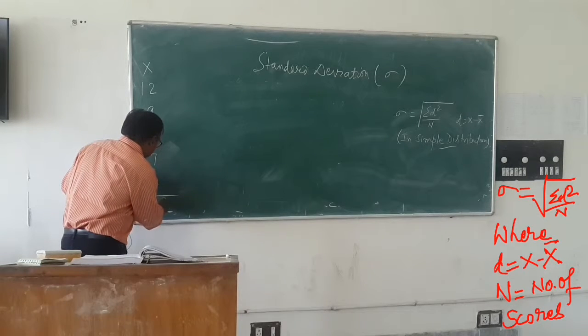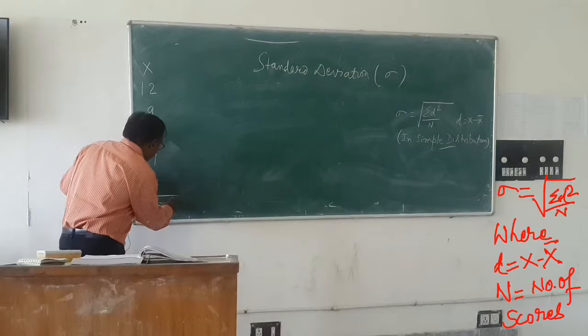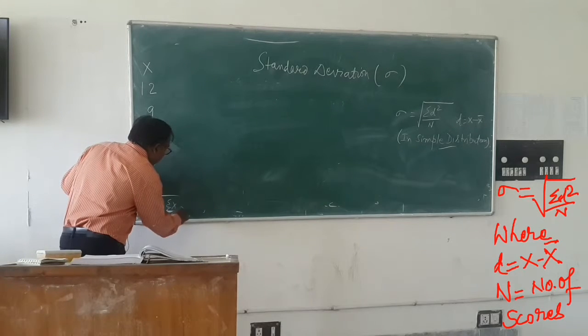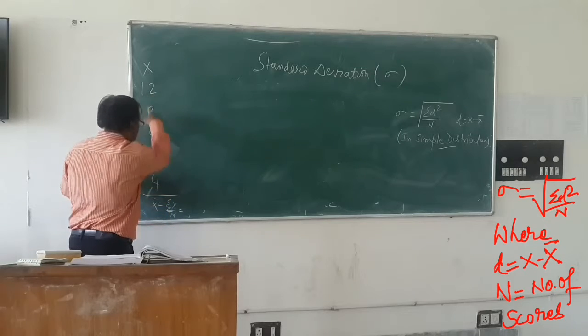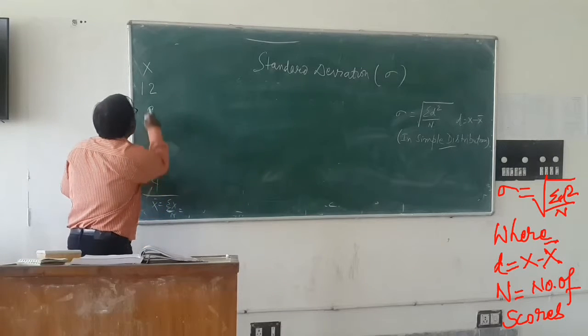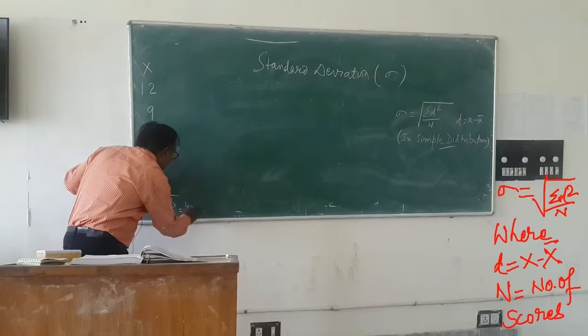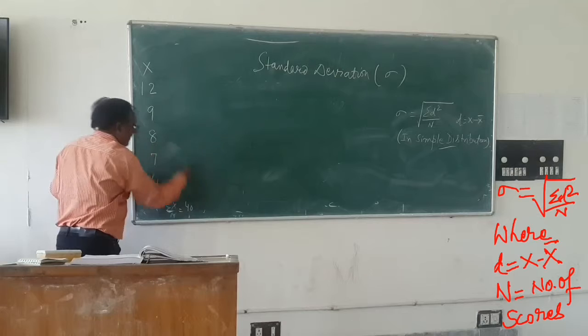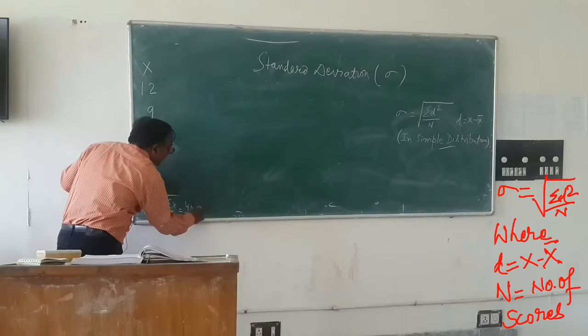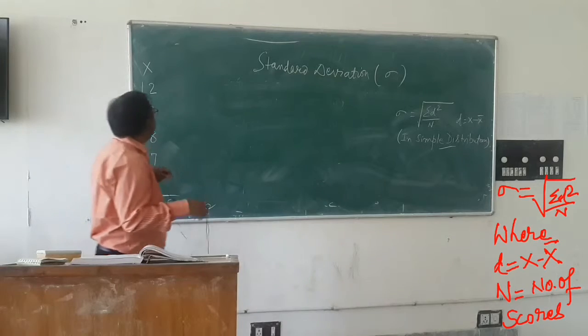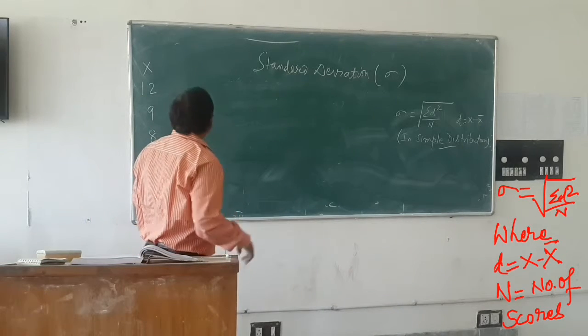So x bar is equal to summation x by n. So summation x, this is all how much? Summation x how much is? 40. So 8, as you rightly told, it is 8. So 8 is the mean.